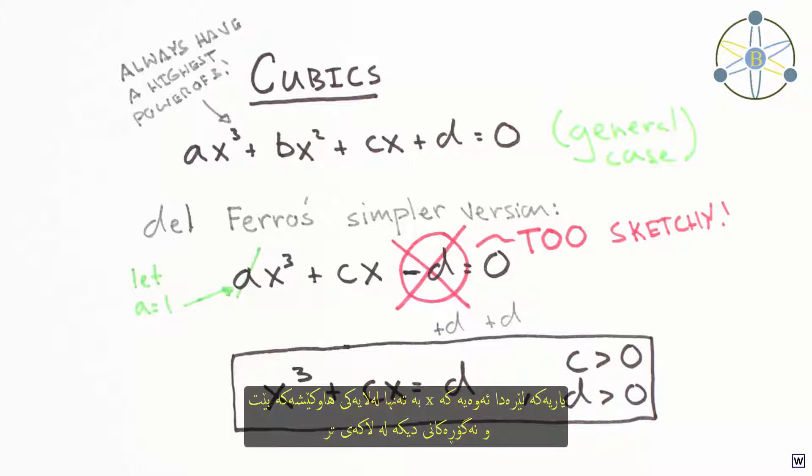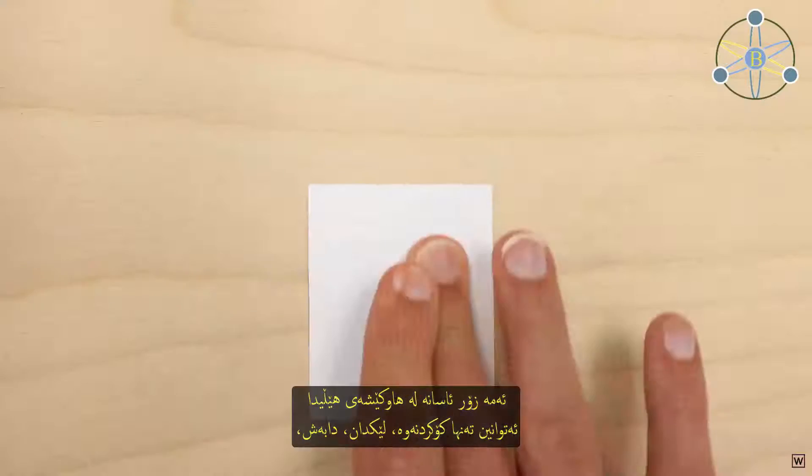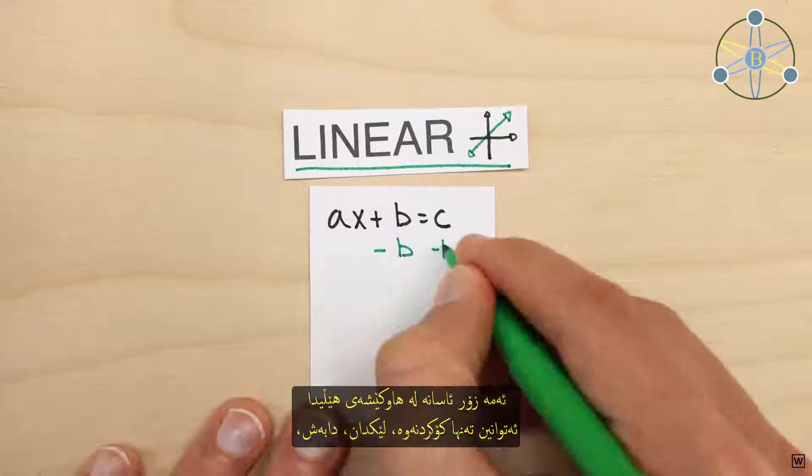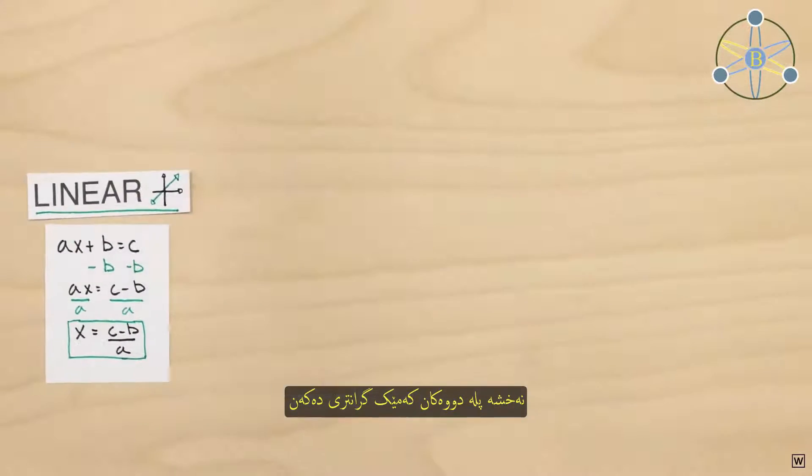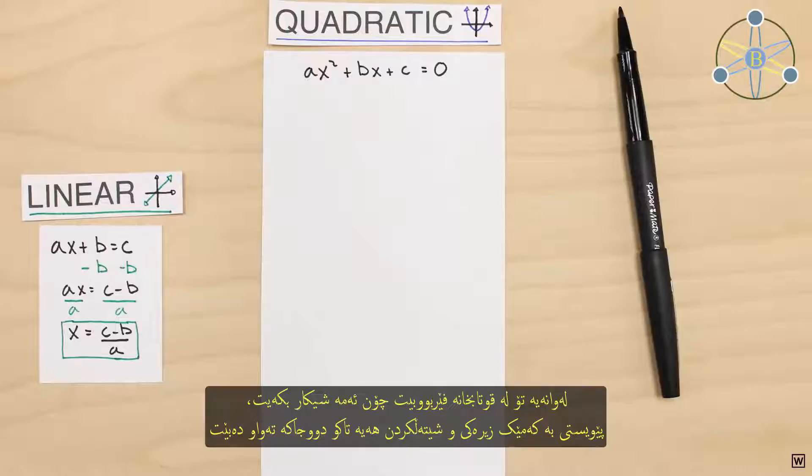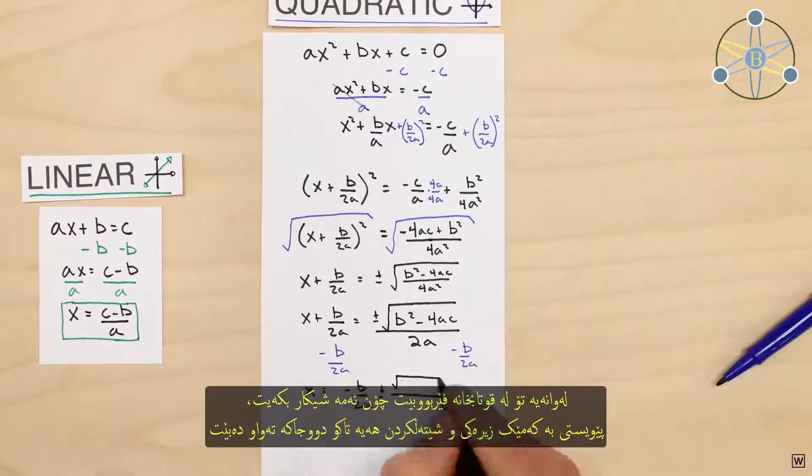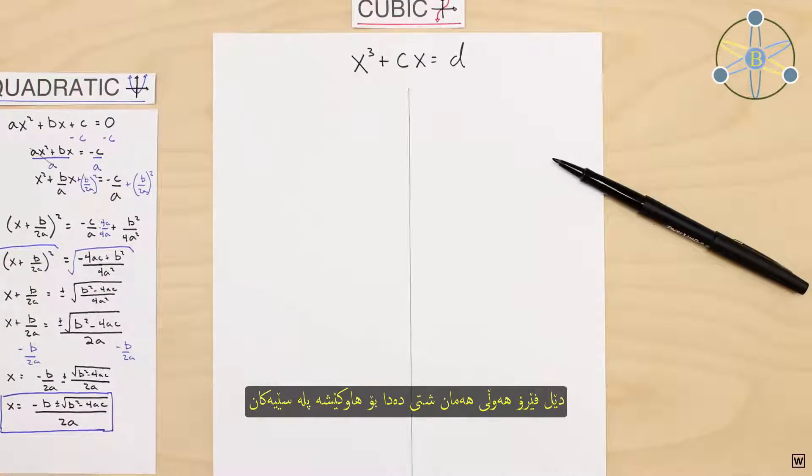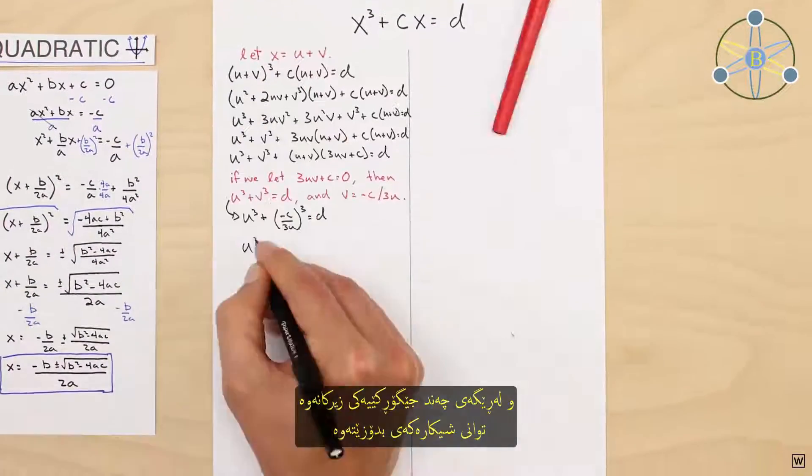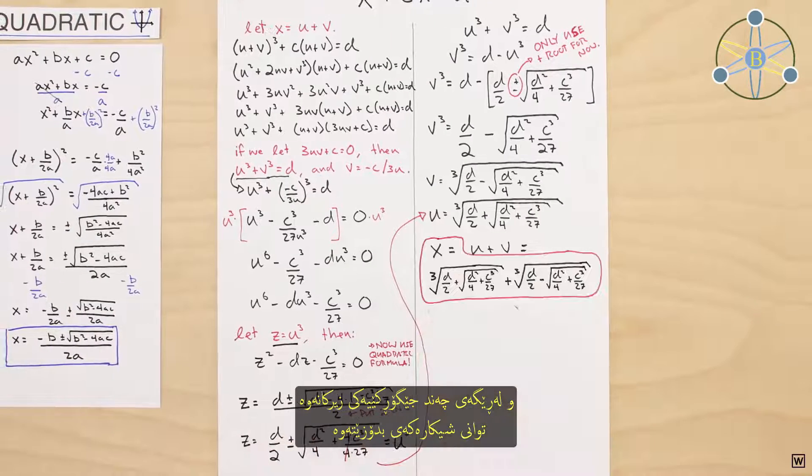Now that we have our equation set up, the game here is to get x by itself on one side and all the constants on the other side. This is pretty easy in linear equations. Quadratics make this a bit harder. You may have learned how to solve these in school. Delferro was trying to do the same thing for his cubic equation, and through some clever substitution he eventually found a solution.